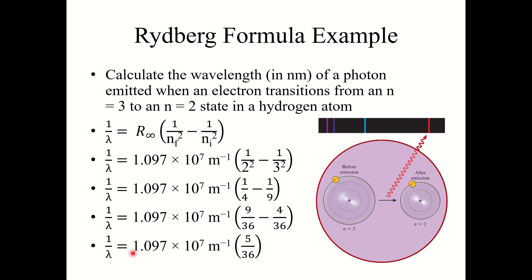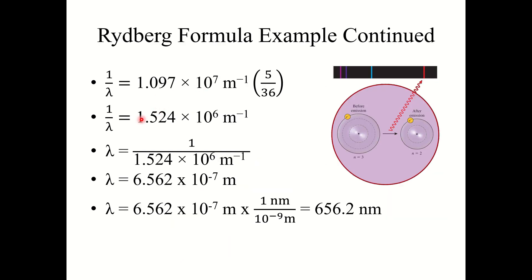So 1 over lambda equals 1.097 times 10 to the seventh multiplied by 5 over 36. That gives you 1.524 times 10 to the sixth inverse meters. Now we just need to solve for lambda, so you could multiply lambda over and then divide this constant back. Lambda equals 1 over 1.524 times 10 to the sixth inverse meters, which gives a final answer of 6.562 times 10 to the negative seventh meters. When converted to nanometers, you get 656.2 nanometers.